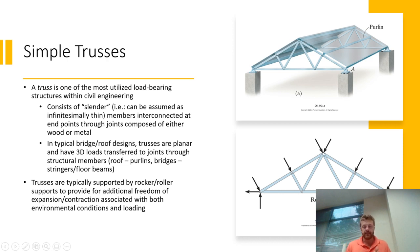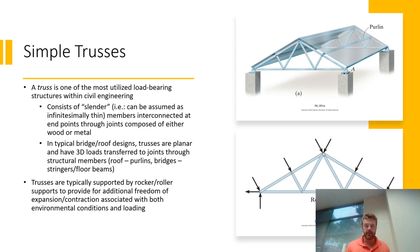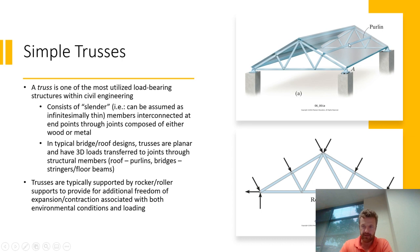What the book means by slender is that we can actually ignore the width of these members — we're only going to be concerned about their length from an analysis point of view. The key thing you need to know is when these are deployed in the real world in civil engineering applications like roofs or bridges, you have additional structural elements that will actually serve to transfer the load to the joints of the trusses. Here in the upper right, you see for a roof type application, they're referring to this member that runs along the length of the roof as a purlin.